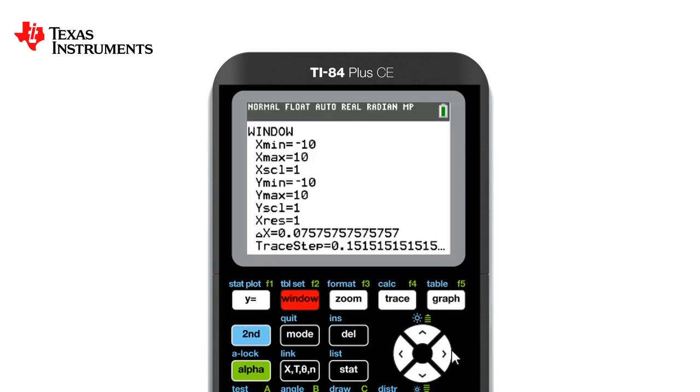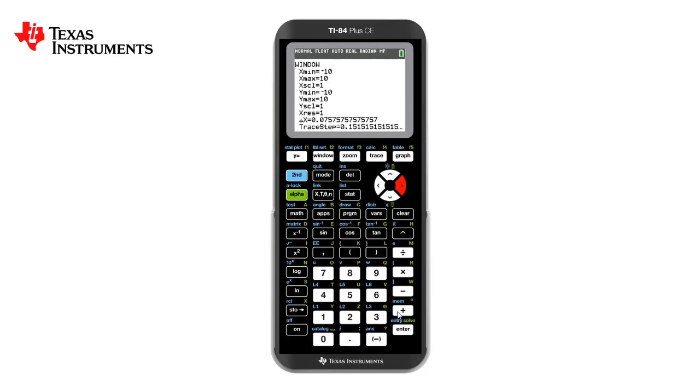We change our x min to five more, and our x max to five more as well. Notice that these calculations occur automatically. We then need to change our y min one further up by taking one off both the y min and the y max. Now when we press graph, the axis is now at the start of the water spout.